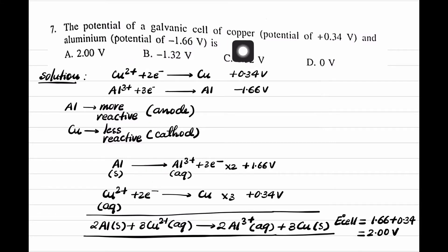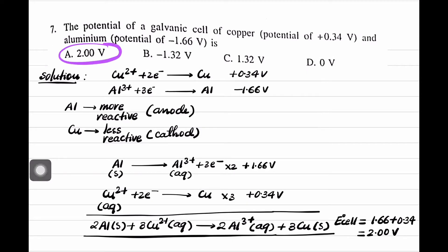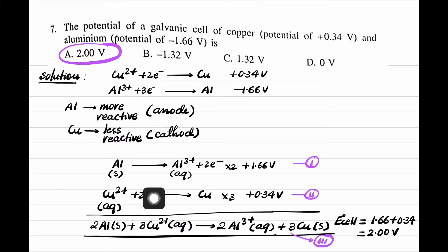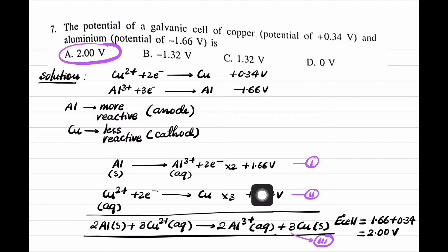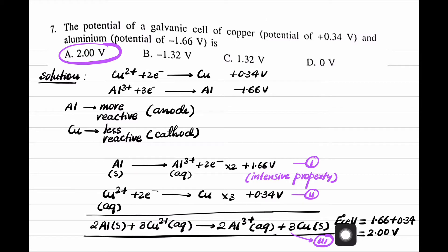The potential of the galvanic cell of copper and aluminium is 2 volt, which is the correct answer. One important point to remember: when we add equations 1 and 2 to get equation 3, the E°cell is non-additive because it is an intensive property. What we are actually adding is the ΔG values — ΔG3 = ΔG1 + ΔG2.